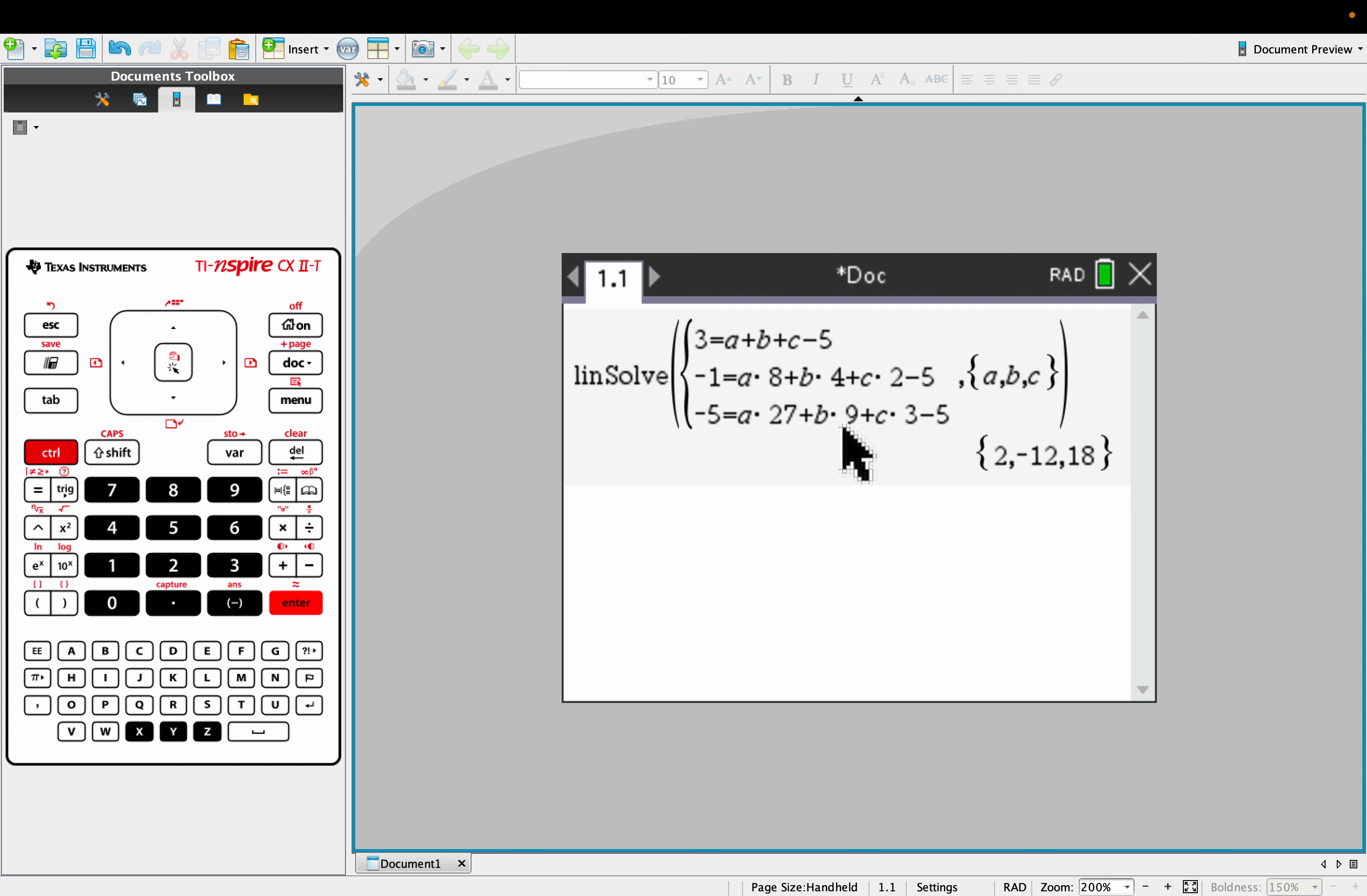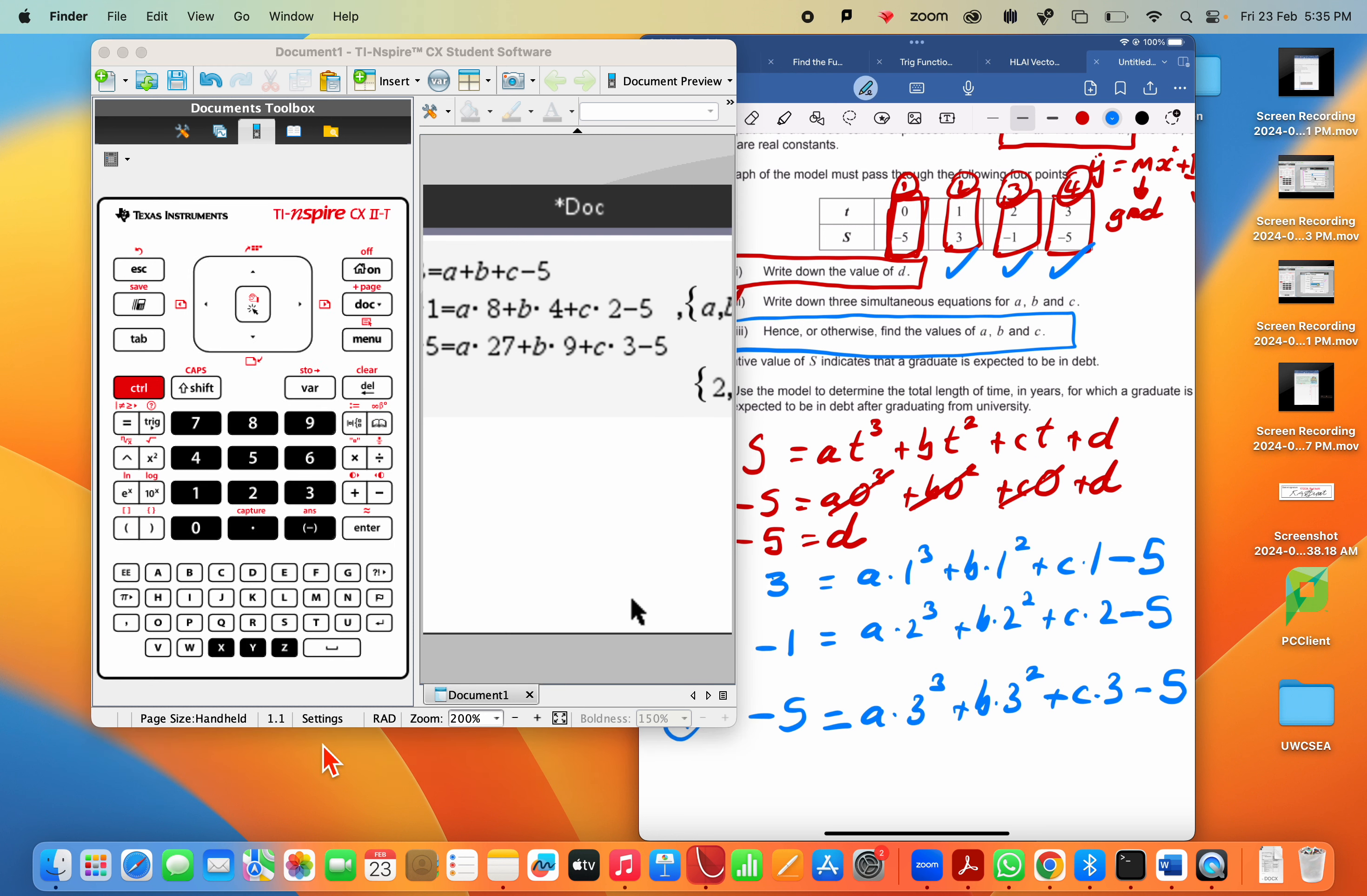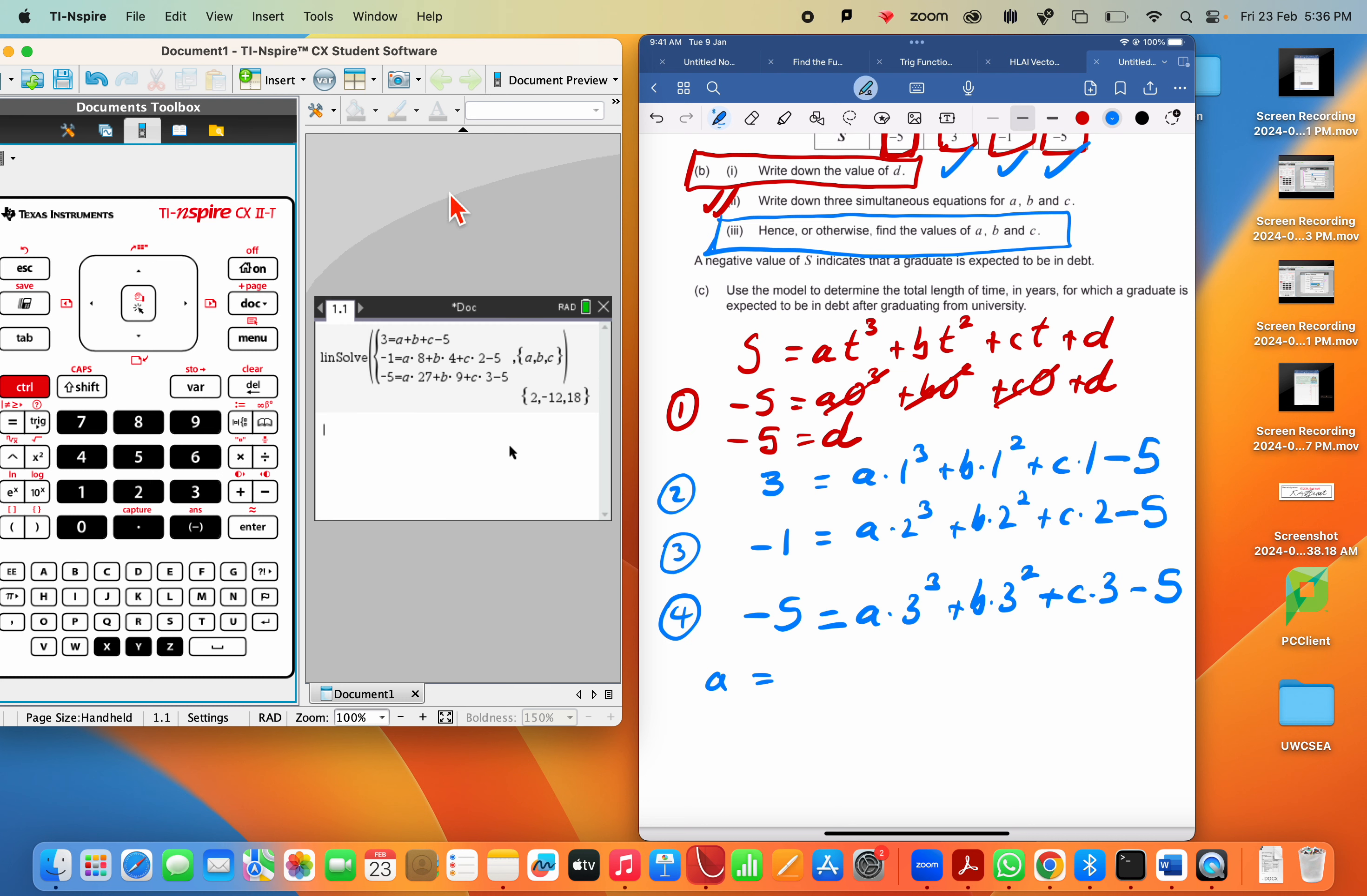I think I've got them all typed in. Boom. And that's it. A equals 2, B equals negative 12, and C equals 18. So let's just go ahead and transfer those to our iPad solutions. Make it a little bit bigger. So at the bottom of this page, I'm going to put the answers. A equals 2, B equals negative 12, C equals 18.